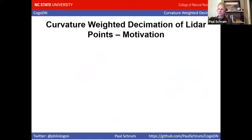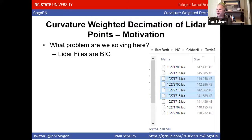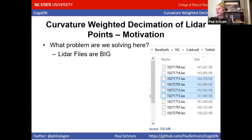You submit the request and it downloads the LiDAR files, composes them, and lets you download them. As you can see, these LiDAR files are just bare earth at eight pulses per square meter. Each LiDAR file is 2,500 feet square, so if you wanted 5,000 feet square and got four files, that's half of a gigabyte. That's what I mean by the files are big.